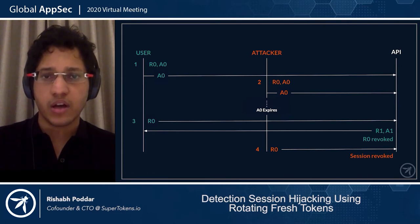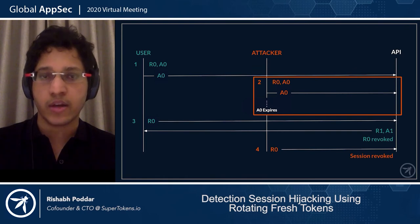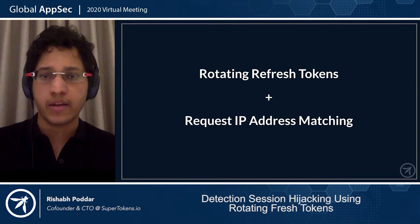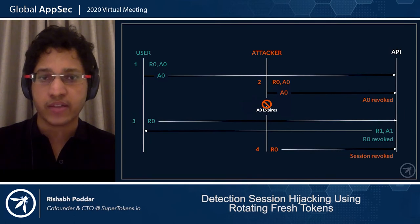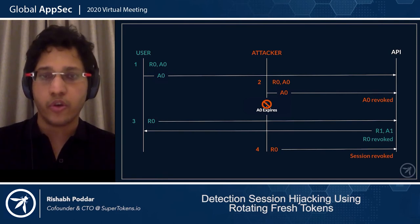There are a few problems with this. The first is that in step two the attacker can use A0 to successfully perform session hijacking. The way to solve this is to make sure access token lifetimes are very small, and we can also combine rotating refresh tokens with IP address binding — specifically binding the IP address to the access token. When the attacker uses the access token from a different location, we can check that the IP address has changed and immediately revoke A0, rather than waiting for it to expire naturally. This would force users to use their refresh tokens, at which point session hijacking would be detected.